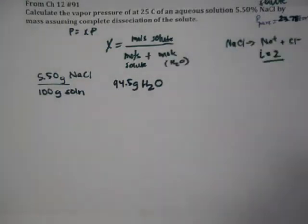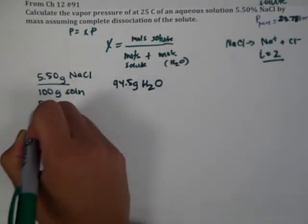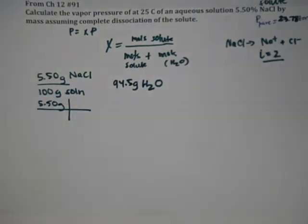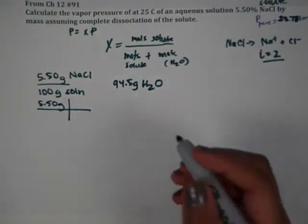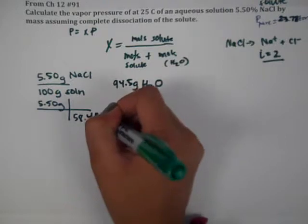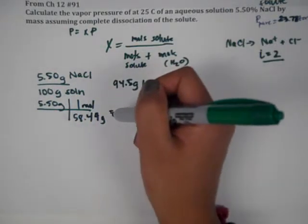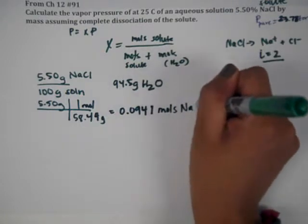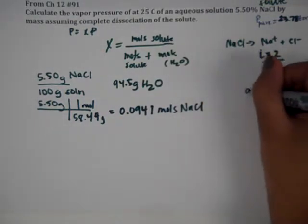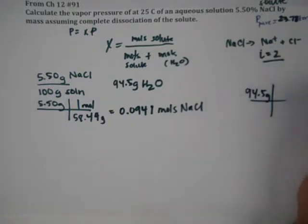Now, we have to convert both of these to moles. So, the first one, we're going to have 5.5 grams, convert those to moles with the molar mass of 58.44 grams per mole. And so, that's around 0.0941 moles of NaCl. And then water, we're going to have 94.5 grams. And we all know by now that water is around 18.0 grams per mole. So, that's roughly 5.247 moles of water.